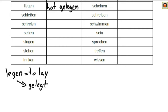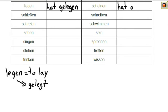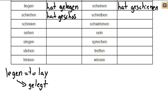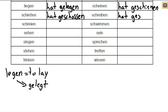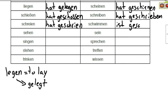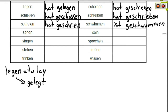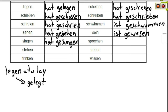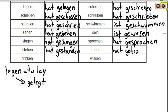Scheinen: hat geschienen. Schießen: hat geschossen. Schreiben: hat geschrieben. Schreien: hat geschrien. Schwimmen: ist geschwommen. Sehen: hat gesehen. Sein: ist gewesen. Singen: hat gesungen. Sprechen: hat gesprochen. Stehen: hat gestanden. Treffen: hat getroffen. Trinken: hat getrunken. Wissen: hat gewusst.